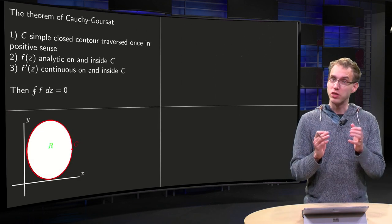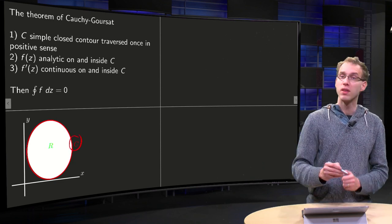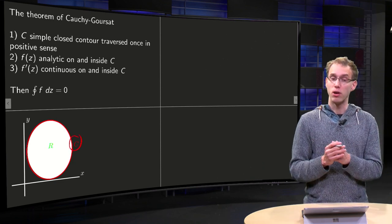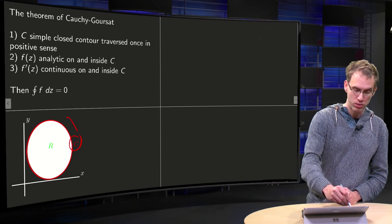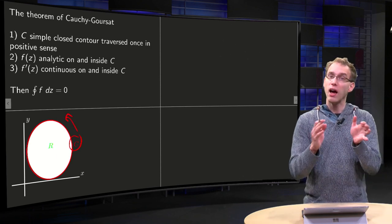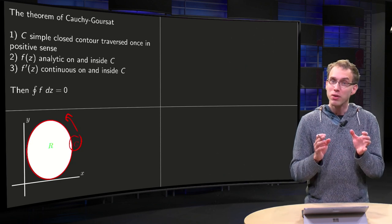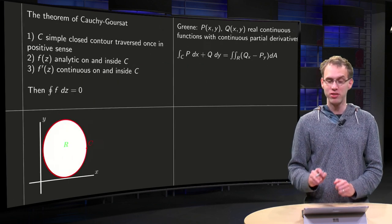So, what's the situation? We have our C, our closed contour. We go counterclockwise once, and we surround an area R.